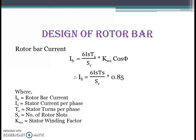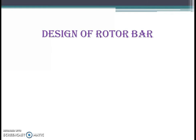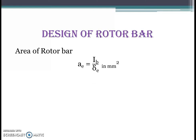Once the rotor bar current is available, it is very easy to calculate the area of the rotor bar. The area equals the current divided by the current density, giving us the cross-sectional area of the rotor bar.